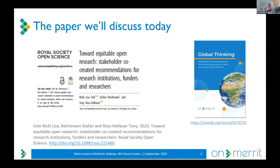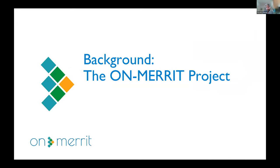Just to mention that we also have a policy output — a policy document which was the main output in terms of impact on affecting policy. The paper is more about the methods and an overview of the process. I'll give background on the ON MERIT project itself, talk about using Delphi and co-creation, and then Nikki will lead us through the exact steps we followed in our co-created modified Delphi process.